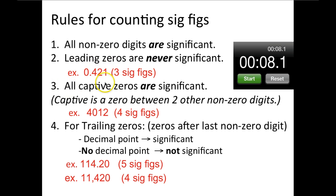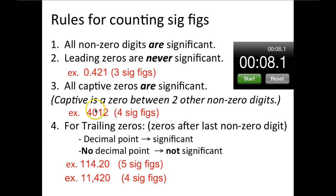All captive zeros are significant. If it's a captive zero, that means it's between two other non-zero digits. So let's look at this example: 4,012 — we have 4 significant digits because that zero is significant.